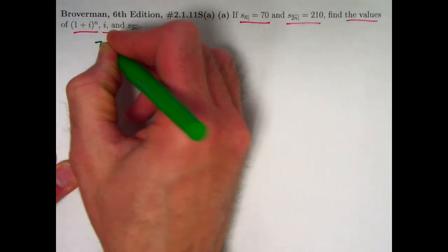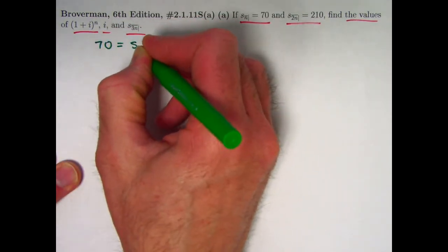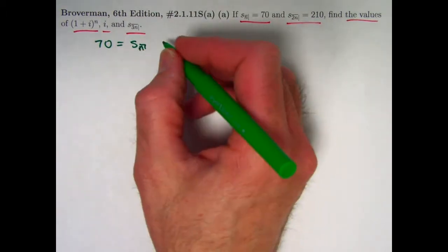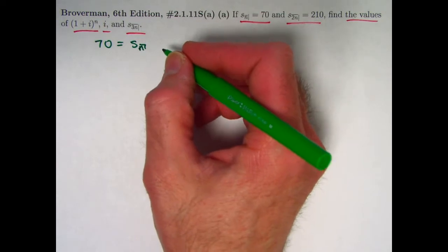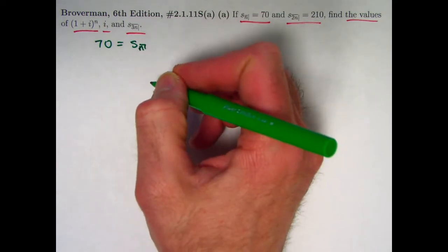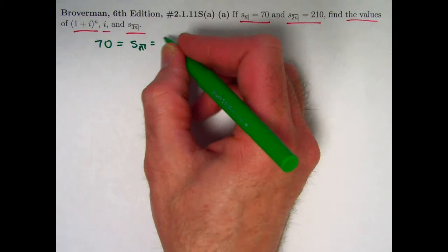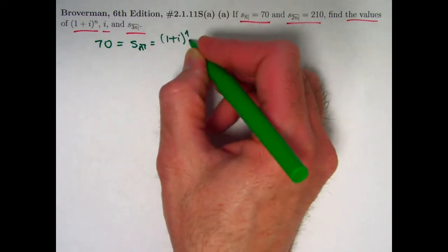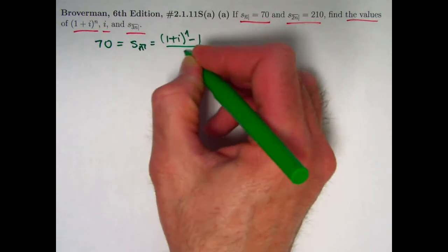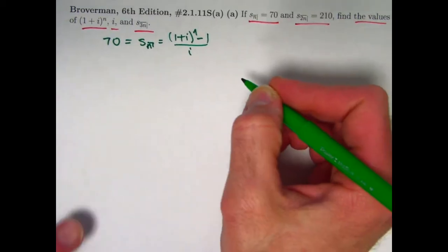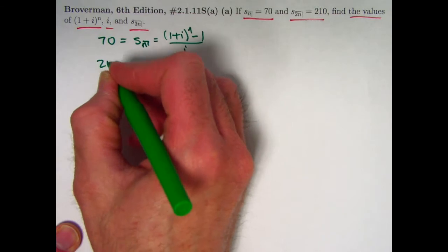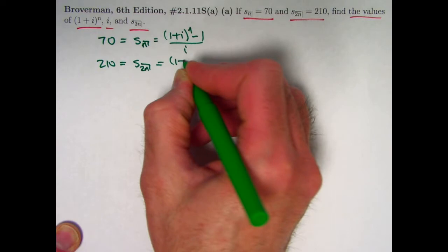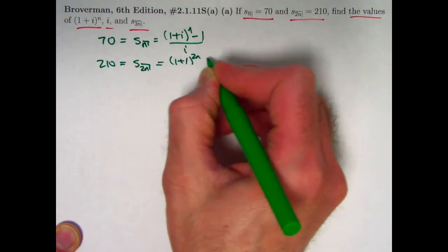Write down what you're given: 70 equals s_n. As we saw in the last couple videos, there's a formula for s_n related to the fact that this can be thought of as a geometric series. The formula is s_n equals ((1+i)^n - 1) / i. I can write a similar formula for s_2n equaling 210, except replace n with 2n.